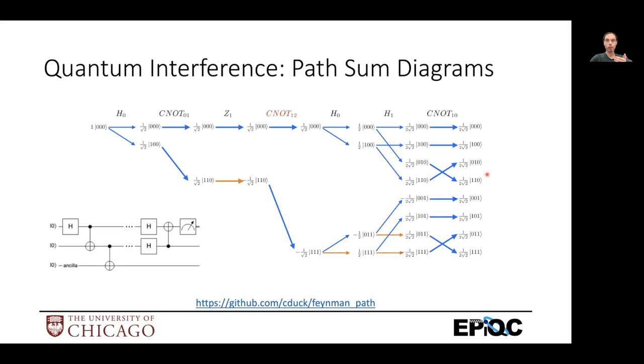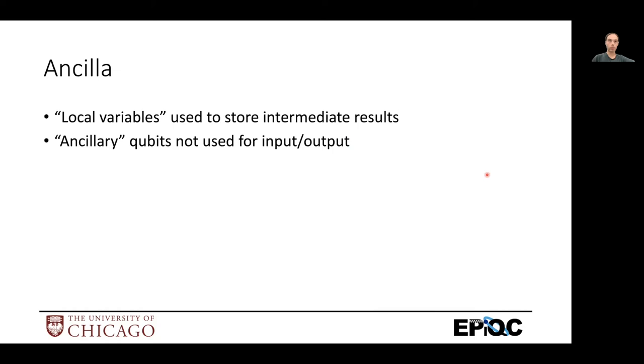But it turns out that if you just reset it to 0, that's the same as measuring it and then if it's a 1 performing an X gate on it. So it has the same detrimental effect. Okay, so now let's get into the main part of today's lecture. So what's an ancilla?